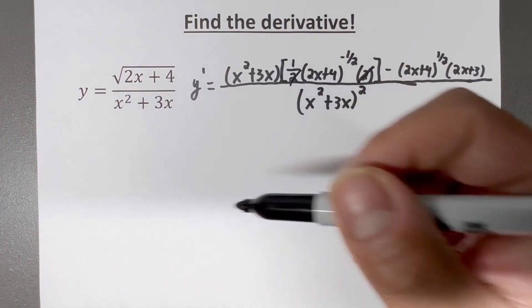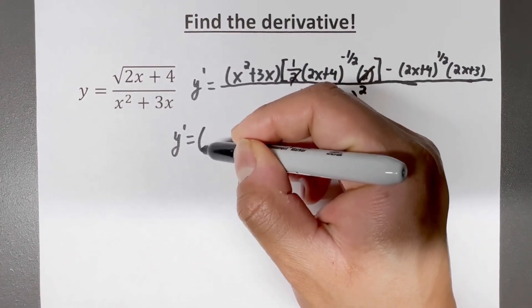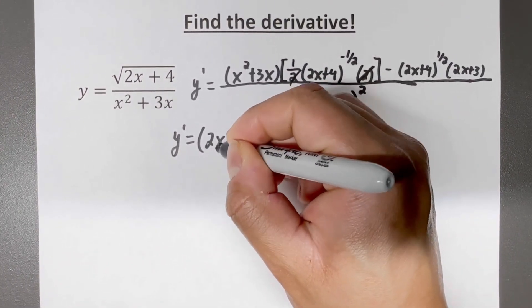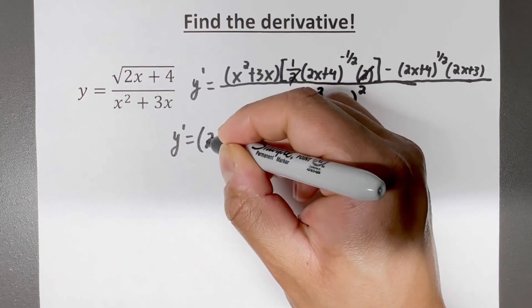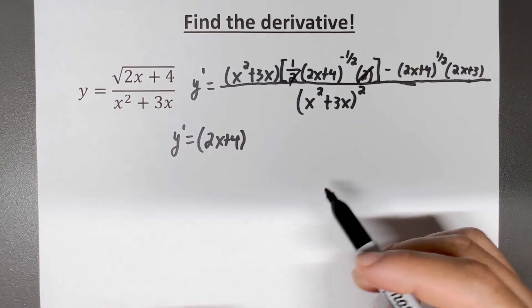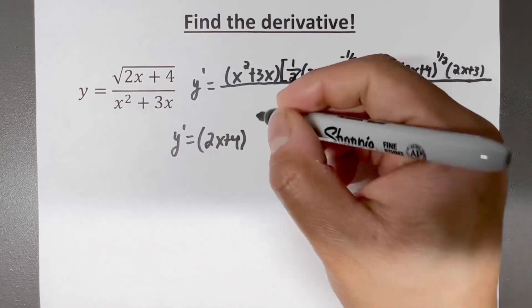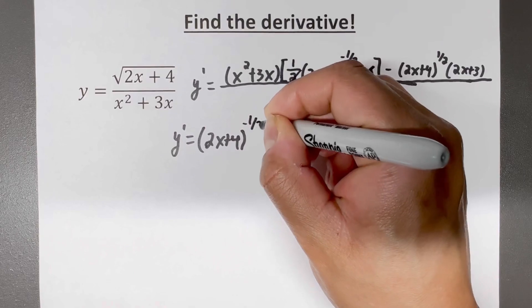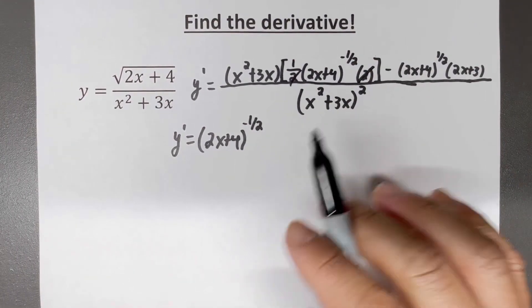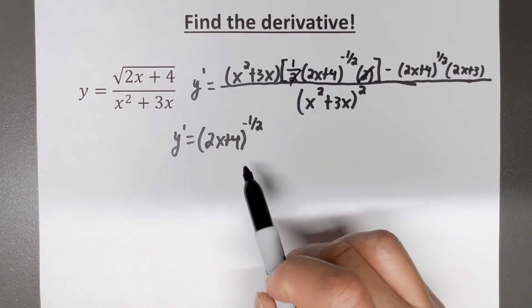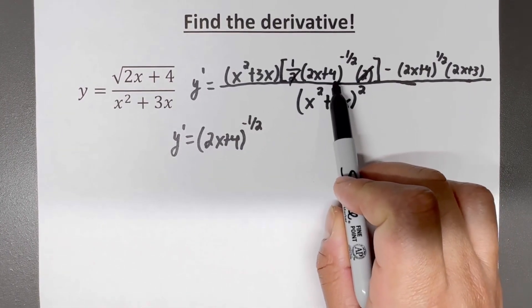So I want to factor that out. I'm going to get 2x plus 4 — but remember, it's just algebra. If I'm factoring it out, I have to bring the smallest power in the front. We're comparing negative one half to one half. The smallest power would be negative one half. So I pulled out 2x plus 4 raised to the negative one half.